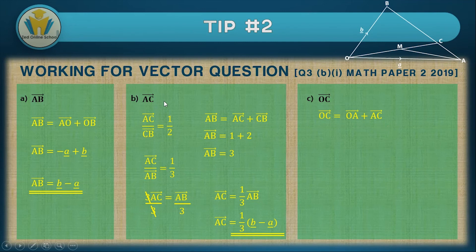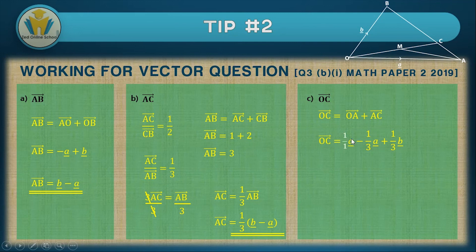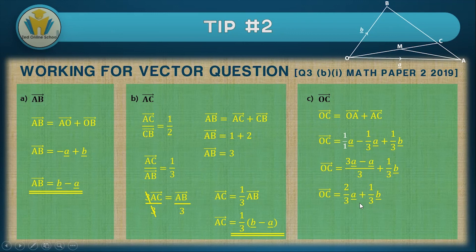For OC, we use: OC equals OA plus AC. OA is just vector a. Substituting AC equals one-third (b minus a) and expanding gives two-thirds a plus one-third b. Simplifying the a terms: a minus one-third a gives two-thirds a. Factorizing with common denominator three and numerator factor one: OC equals one-third (2a + b).